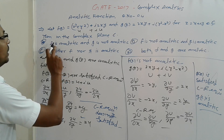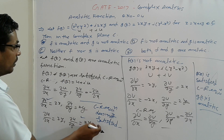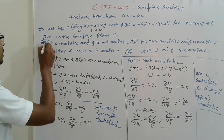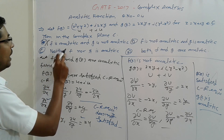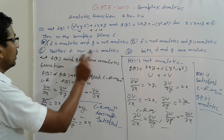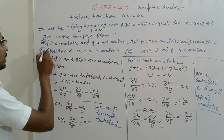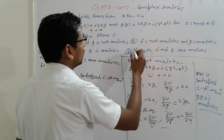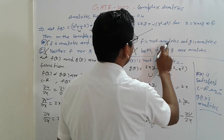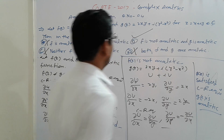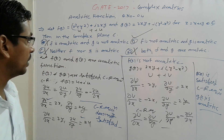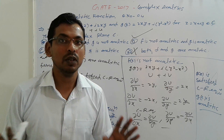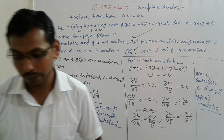Now come to the options. F is analytic — but here f is not analytic, so that is wrong. Neither f nor g(z) is analytic — but that is also wrong. Both analytic — that is also wrong. The correct answer is: f is not analytic and g is analytic, so answer B is correct. Use this concept to solve the problems. Take care, thank you, bye bye.